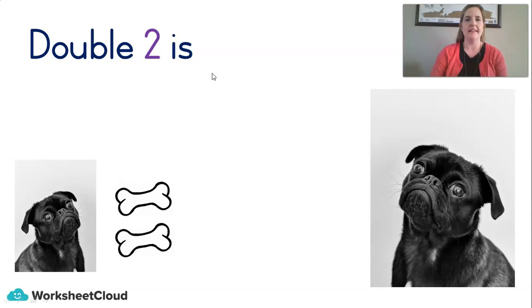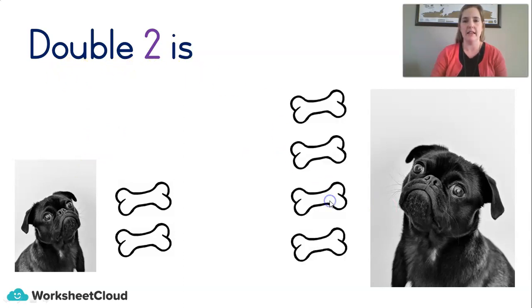Great. Then, we also did double. Double means the small dog gets two. The big dog gets two plus two. That's double. So, double two is two plus another two. One, two, three, four. Four. Double two is four.